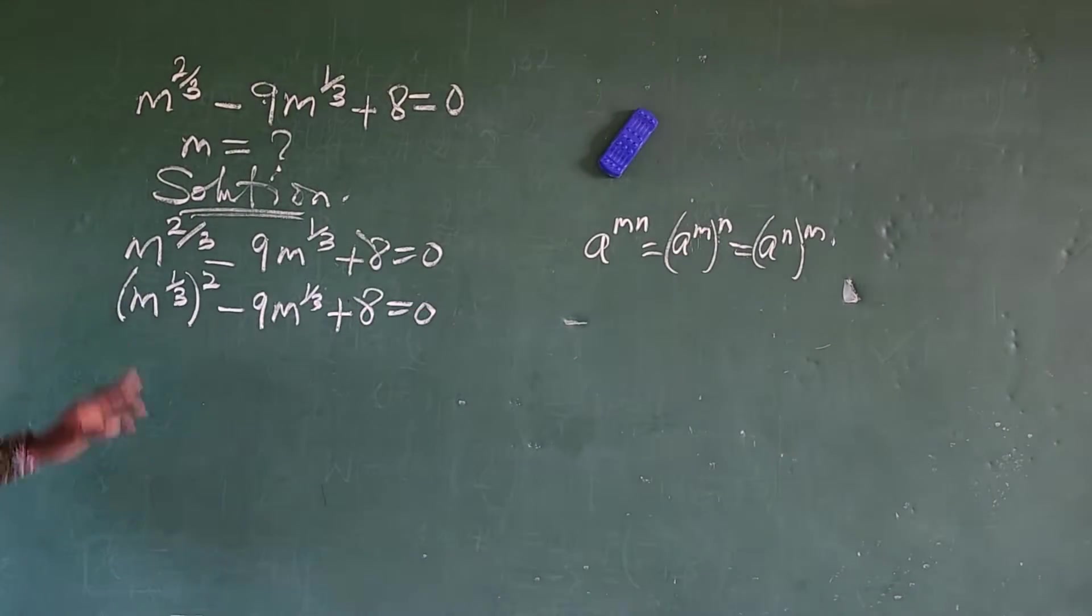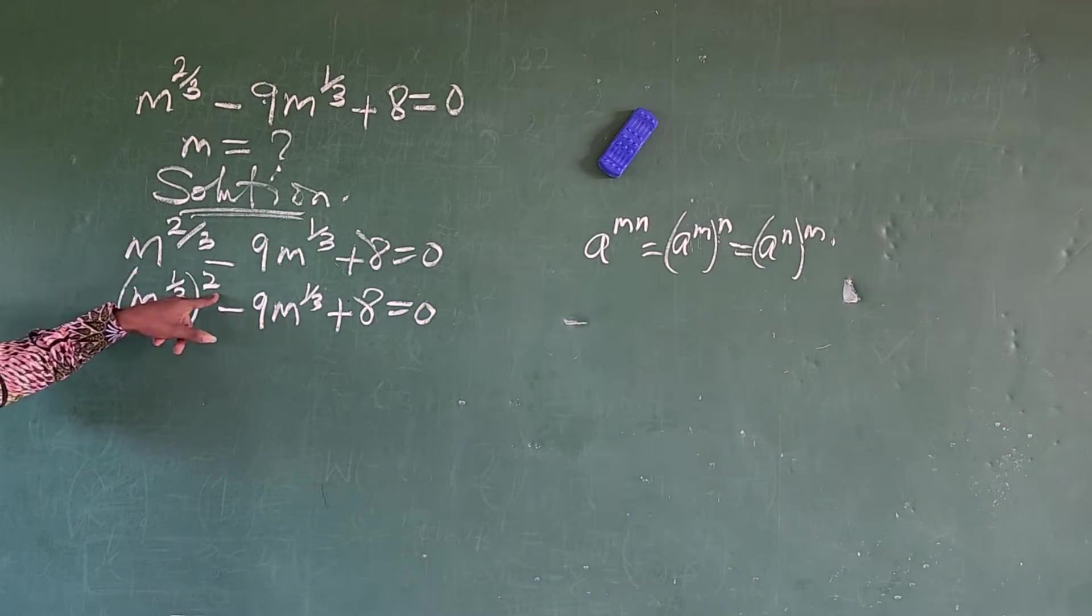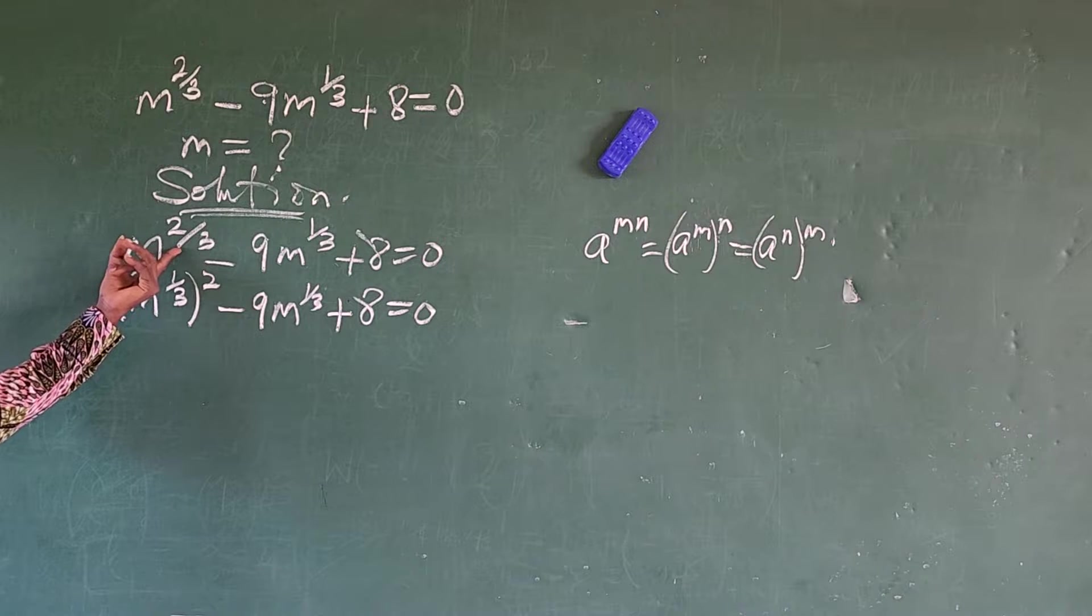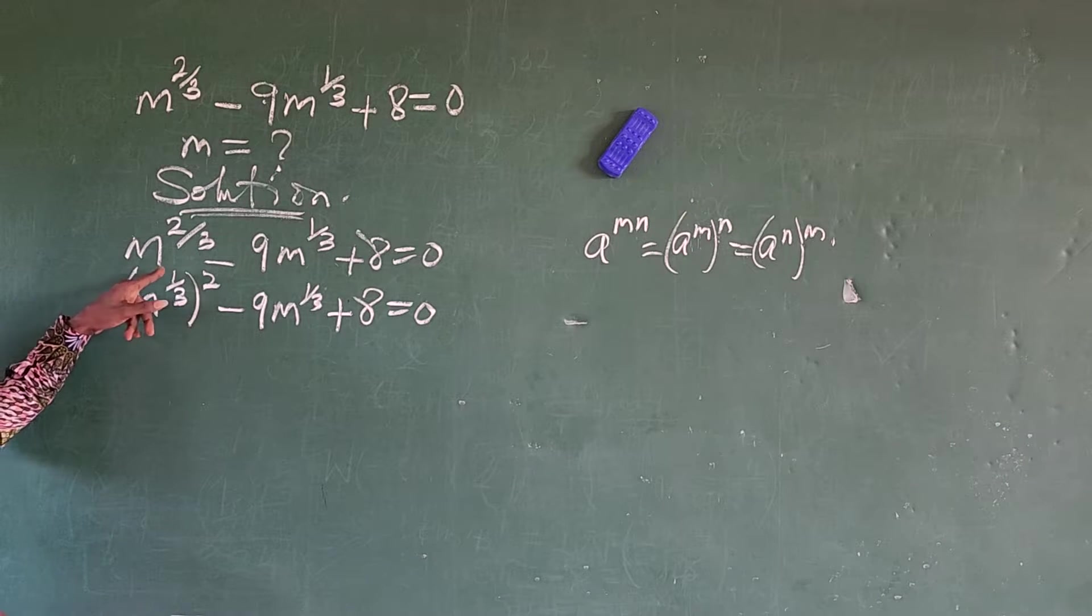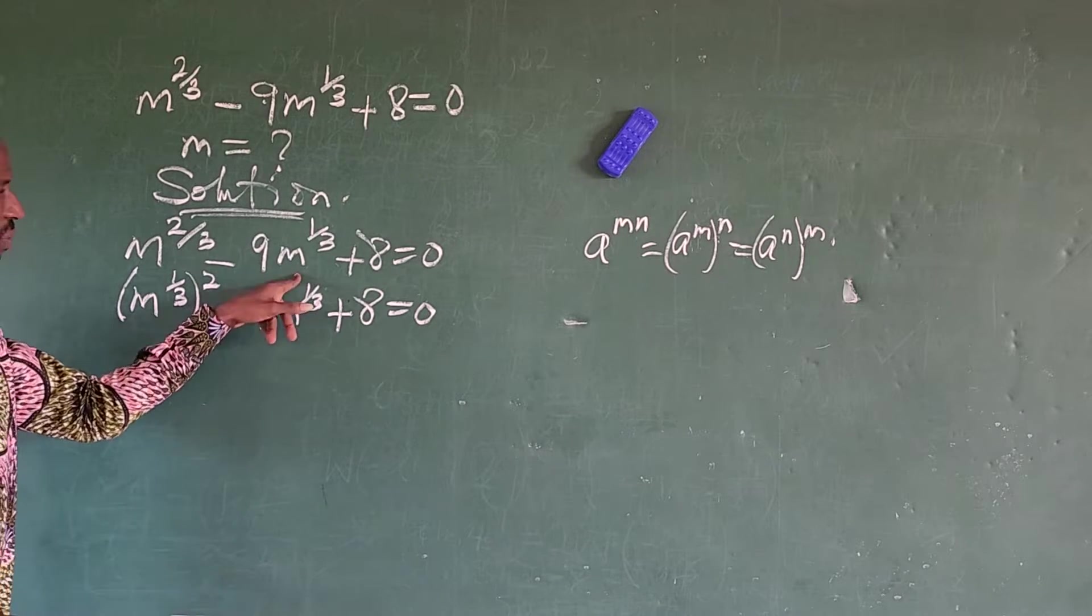The law I just applied here is easy. The law says that a to the power of mn is equal to a to the power of m bracket, or equal to a to the power of n all to the power of m. So remember this law. So that's what I just applied here.